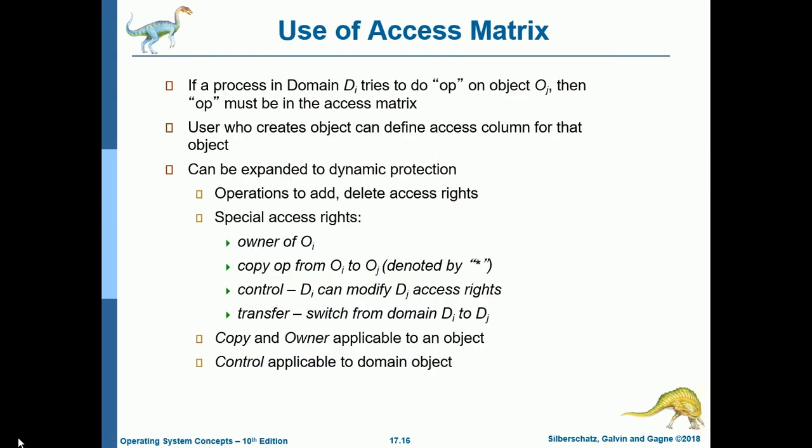The access matrix can be expanded to support dynamic protection with operations to add, delete, or modify access rights. Special access rights include: owner of object O_i (can add/delete/modify operations), copy operations from O_i to O_j (denoted by asterisk), control (D_i can modify D_j's access rights), and switch (transfer from domain D_i to D_j). Copy and owner are applicable to an object, while control is applicable to a domain object. The access matrix design separates mechanism from policy: the OS provides the matrix plus rules and enforces them, while the user dictates who can access what object in what mode.